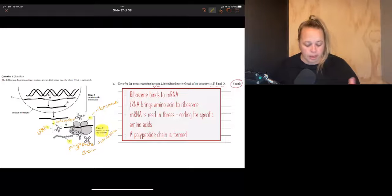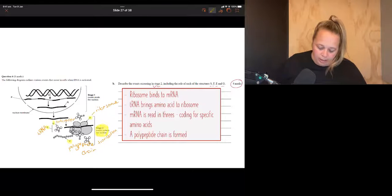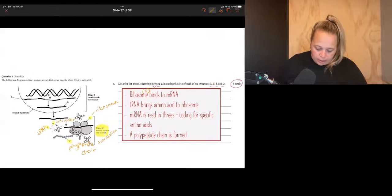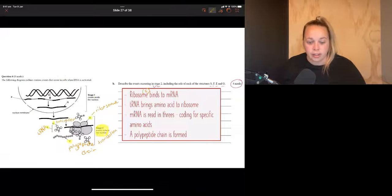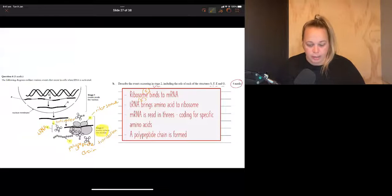So the first one we would say is we're going to talk about this translation process and I'm going to add the letters in as we go. So the ribosome is going to bind to the mRNA. So the ribosome is structure S. And it's going to bind to the mRNA, which doesn't have a letter there. Then the tRNA E brings the amino acid to the ribosome S. mRNA is going to be read in threes coding for specific amino acids.